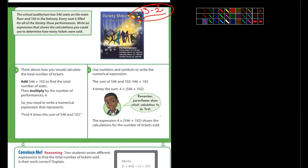They give an example here. It says a school auditorium has 256 seats on the main floor and 102 in the balcony. Every seat is filled for all the variety shows. Write an expression that shows the calculations you could use to determine how many tickets were sold. So they're not asking for the price here, and here it's $4.50, so that's something we don't need. But it says how many tickets were sold. You might think to yourself, well, just 546 plus 102.